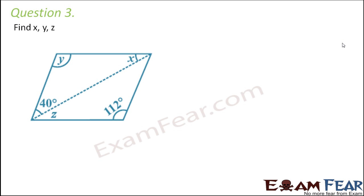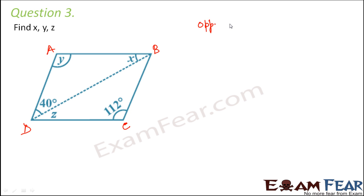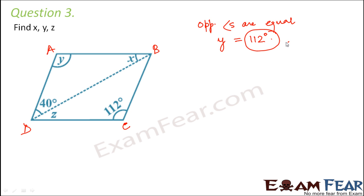Question number three: find x, y, and z. Here again we have a parallelogram; let's call it a, b, c, d. We know that in a parallelogram opposite angles are equal, so y equals 112 degrees since y and 112 are opposite angles.